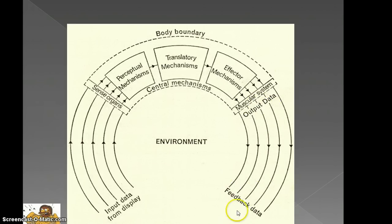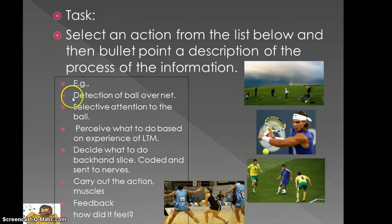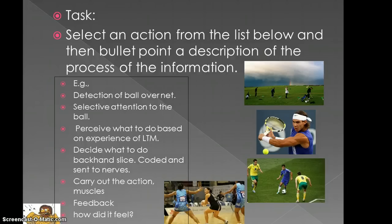So where we're at now is this feedback stage. We're giving feedback so that the next time we encounter the same display, we can affect a similar or different outcome depending on what actually happened. As a task, look at each one of these different actions and identify, using bullet points, a description of the process of information processing using practical terminology and linking it to the theory. For example, the detection of the ball over the net is the sensory aspect of the model, and we could say we need to attend selectively to the ball as opposed to other information such as the crowd or the umpire. Then work your way through each aspect of the model, applying practical application all the way through.